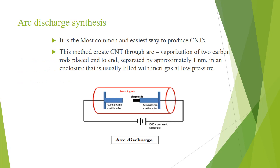In the arc discharge synthesis, there is an inert chamber. This is a common and easiest way to produce carbon nanotubes. Graphite electrodes are placed, separated an approximate distance of around 1 nanometer in an inert chamber. We apply some DC current to these electrodes. These CNTs are deposited on the cathode. This is a common and easiest way to produce CNT.